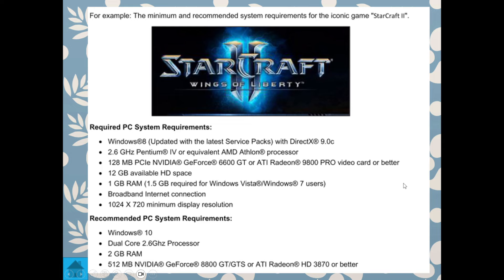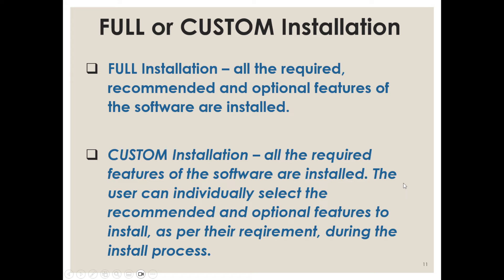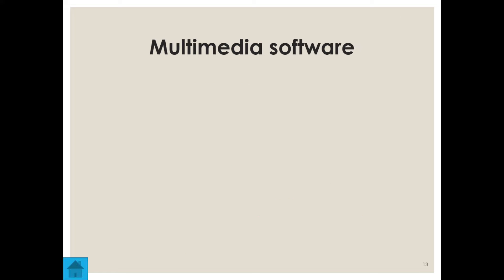When you install software you may be asked about a full or custom installation. A full installation means everything — required, recommended, and optional features — is installed. With a custom installation, the required features are installed, but you can select which recommended and optional features you want. The program or game itself will still install either way.